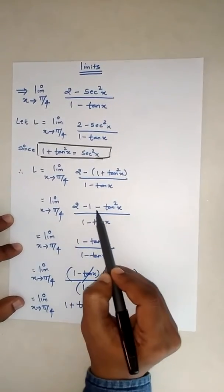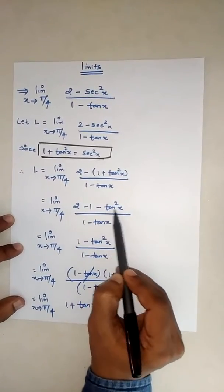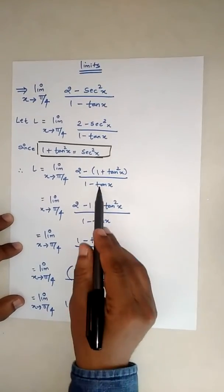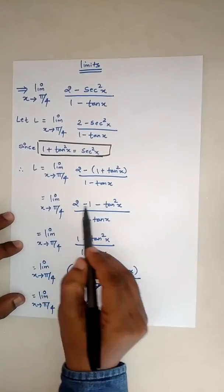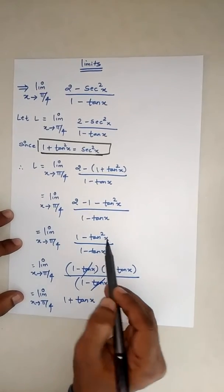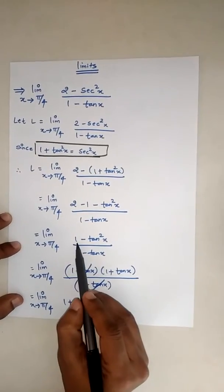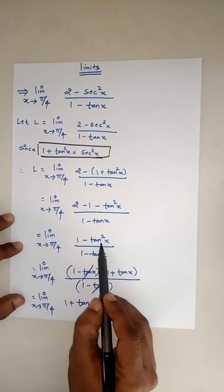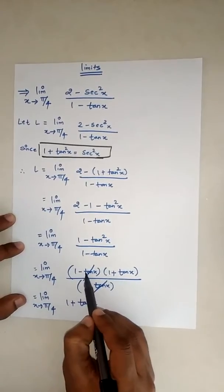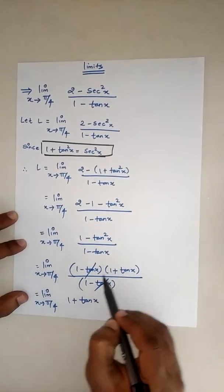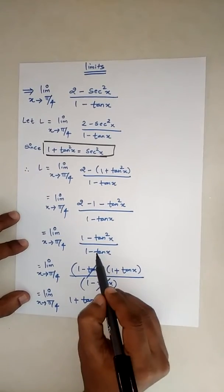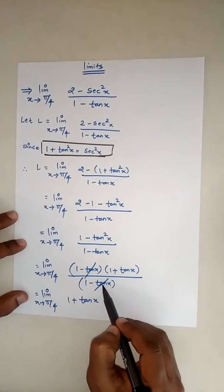Opening the bracket: 2 - 1 - tan²x gives 1 - tan²x in the numerator, with the denominator (1 - tan x) as it is. We apply the difference of squares formula a² - b², factoring the numerator as (1 - tan x)(1 + tan x) over (1 - tan x).